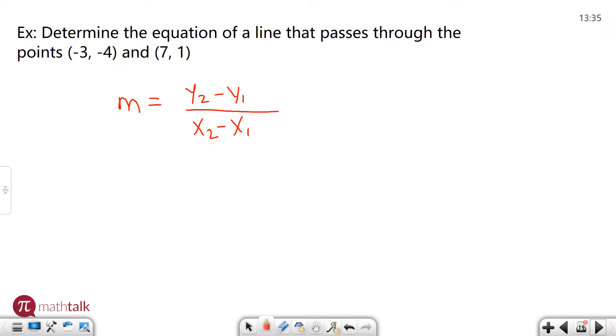My second y is going to be one, my first y is going to be negative four, my second x is seven, and my first x is negative three. So moving on, one minus negative four is five because it's like one plus four. Seven minus negative three is ten. I can simplify that: five over ten is the same thing as one half because they can both be divided by five.